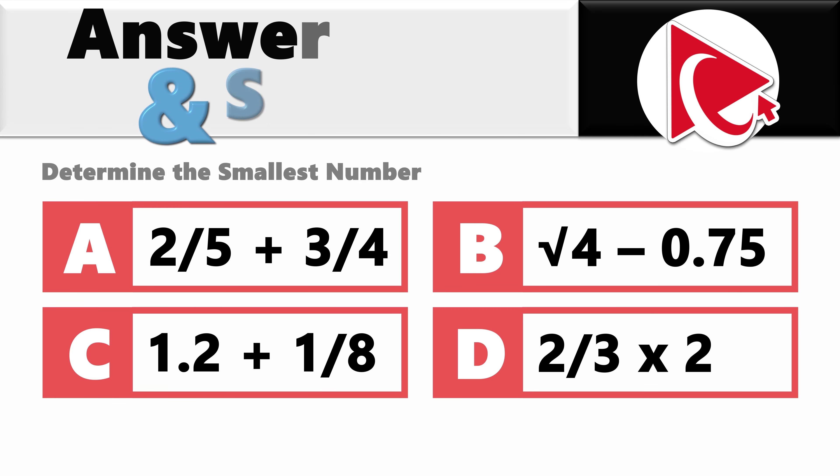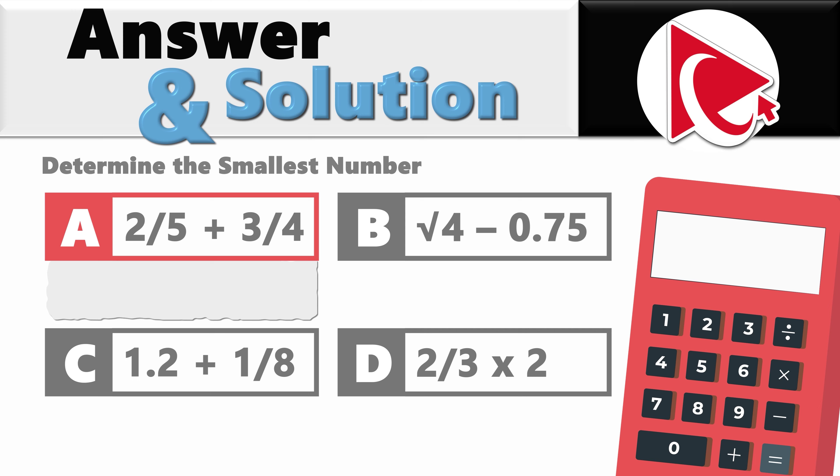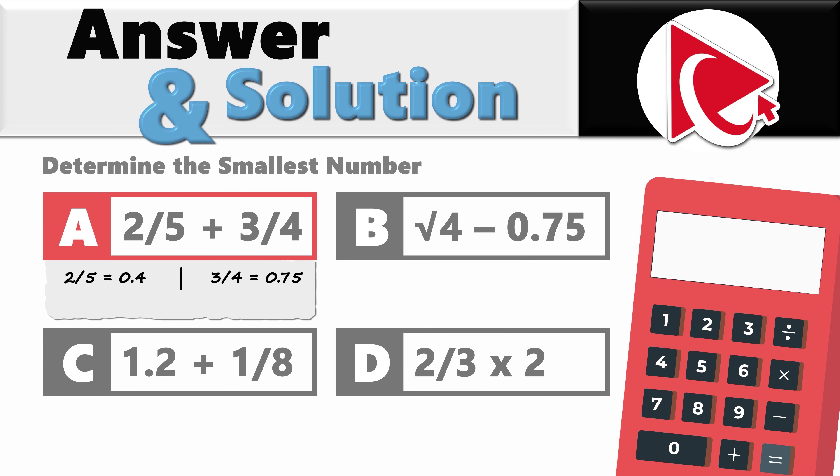The best way to solve this challenge is to solve each expression and convert the end result to decimals. Let's start with the first expression: 2/5 plus 3/4. 2/5 equals 0.4. 3/4 equals 0.75. 0.4 plus 0.75 equals 1.15.